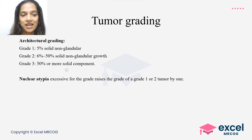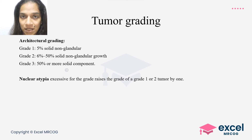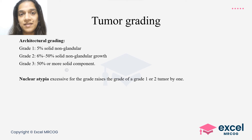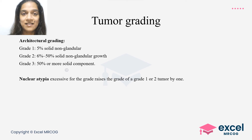The other grade is nuclear atypia. When the nuclear atypia appears excessive for the grade, it raises the grade by 1. So if it is a grade 1 tumor and the nuclear atypia appears excessive for grade 1, we label it as grade 2. Similarly, if it is a grade 2 tumor and the nuclear atypia appears excessive for grade 2, we label it as grade 3.